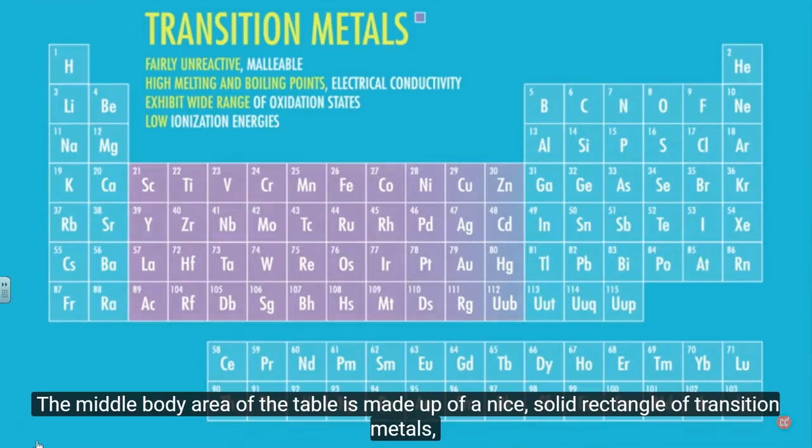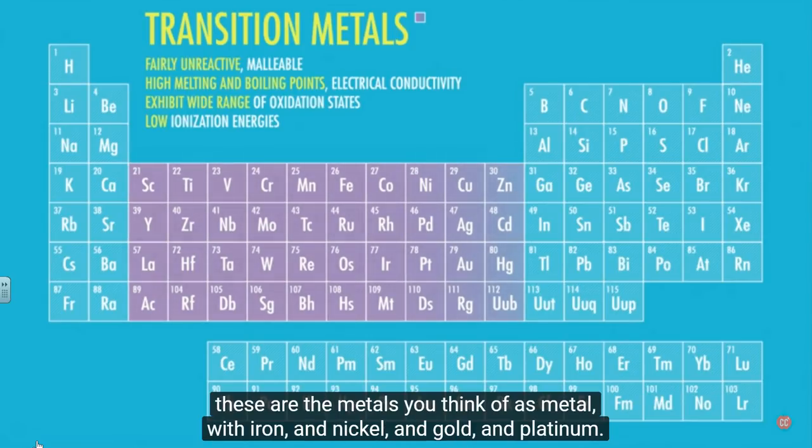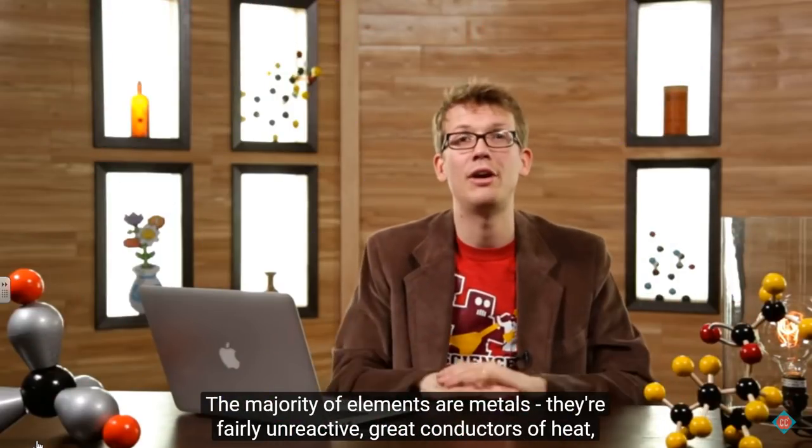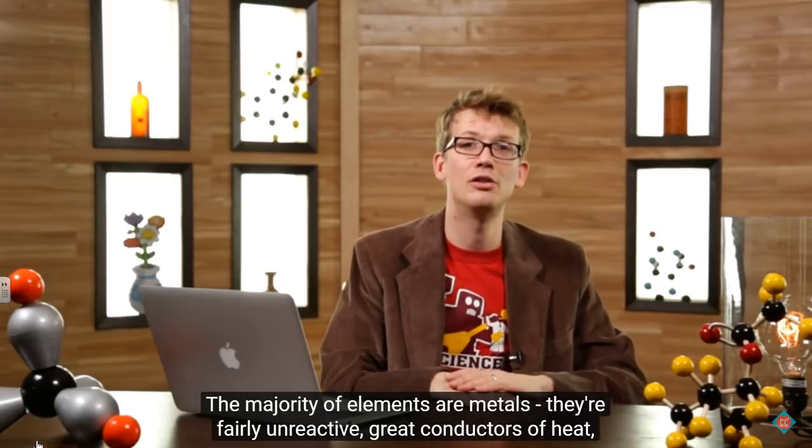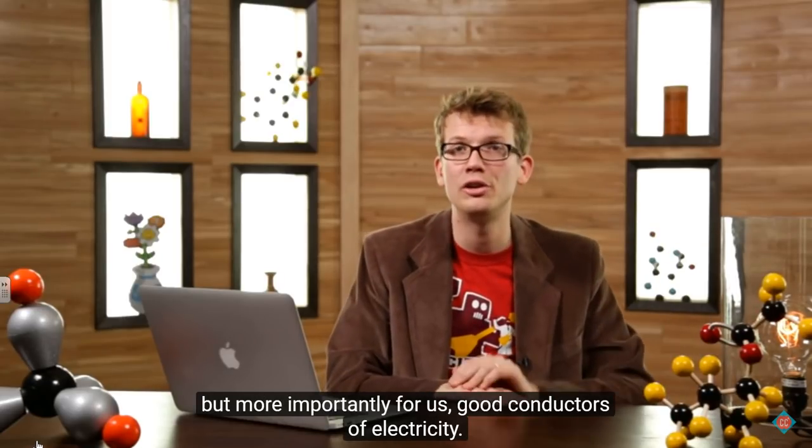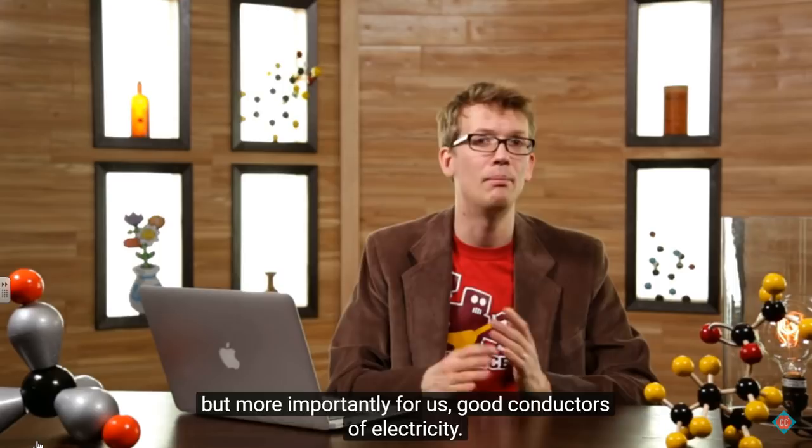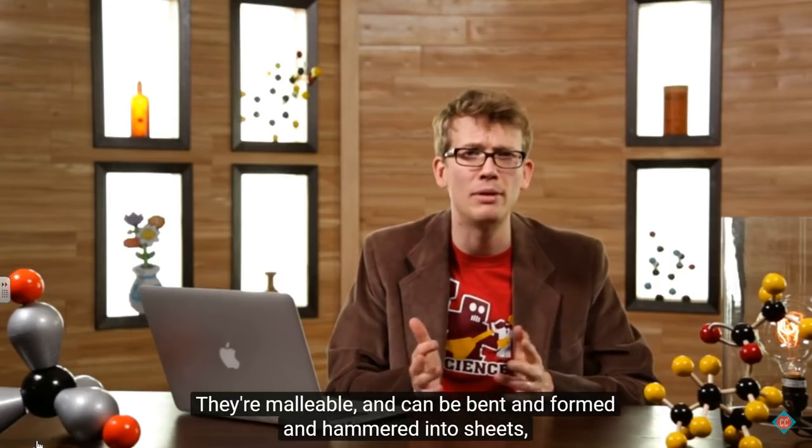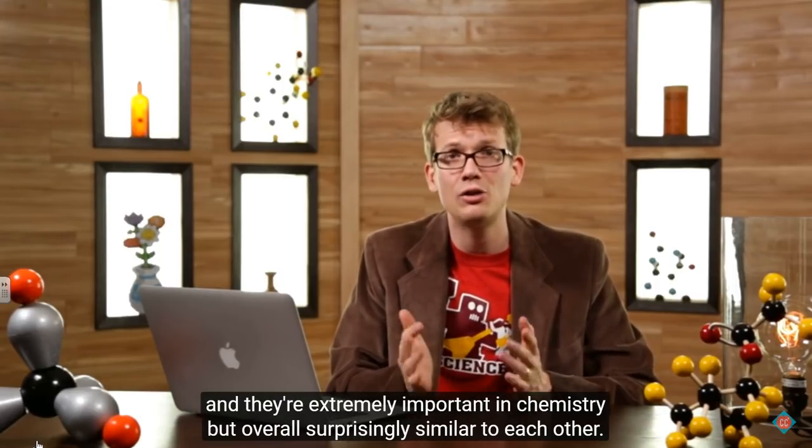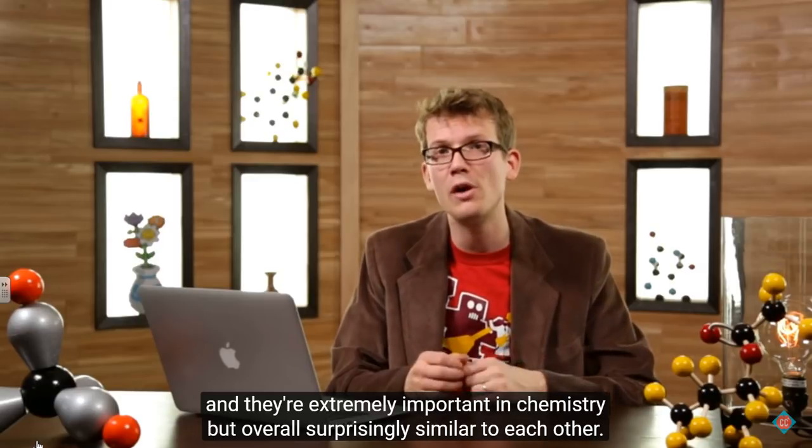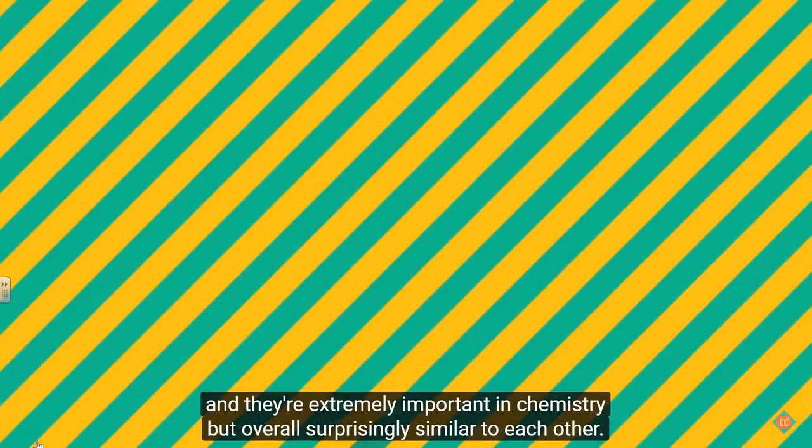The middle body area of the table is made up of a nice solid rectangle of transition metals. These are the metals you think of as metals with iron and nickel and gold and platinum. The majority of elements are metals. They're fairly unreactive, great conductors of heat, but more importantly for us, good conductors of electricity. They're malleable and can be bent and formed and hammered into sheets. And they're extremely important in chemistry, but overall surprisingly similar to each other.